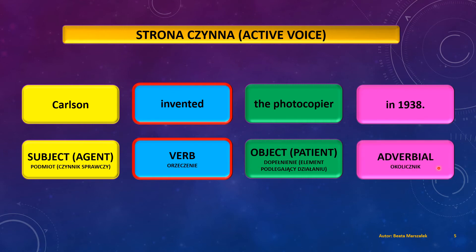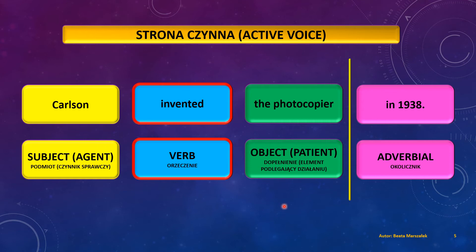Pozostała nam jeszcze jedna część zdania — okolicznik, po angielsku adverbial. Dostarcza on informacji o okolicznościach, w jakich miała miejsce czynność, i typowo odpowiada na pytania: jak, gdzie, kiedy. Oddzielam go od reszty elementów, ponieważ nie bierze on bezpośredniego udziału w tworzeniu strony biernej. Transformacja przebiega w ramach głównego układu części zdania, jakim są podmiot, orzeczenie i dopełnienie. To już wszystko, co należało powiedzieć o stronie czynnej i elementach składniowych. Czas na najważniejszą część tego filmu — za chwilę pokażę, jak wygląda transformacja strony czynnej na stronę bierną.